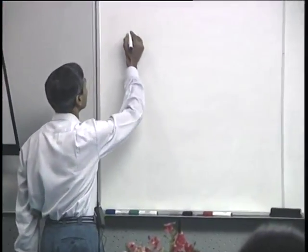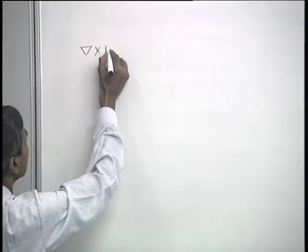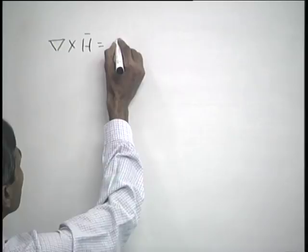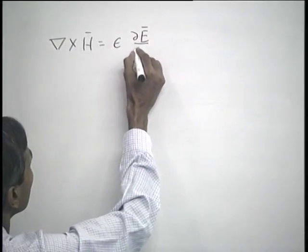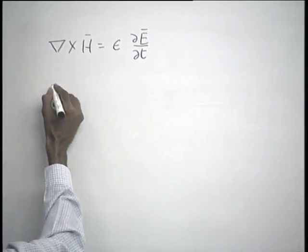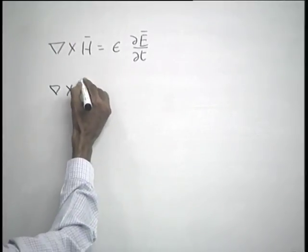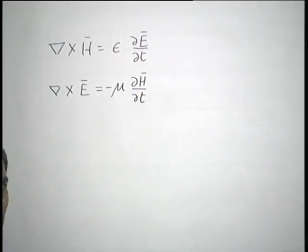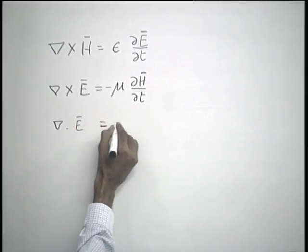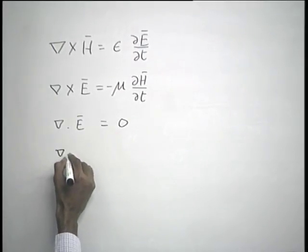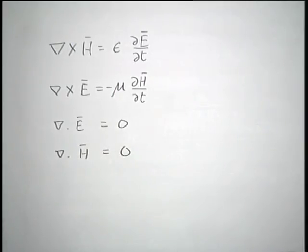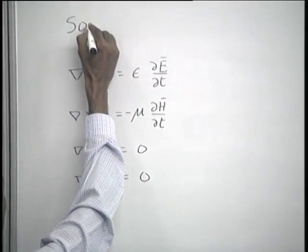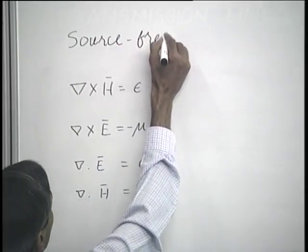Maxwell's equations were written as: del cross H equal to epsilon del E by del t; del cross E equal to minus mu del H by del t; del dot E equal to 0; and del dot H also equal to 0. We obtained this form of Maxwell's equations when we considered a source-free region.